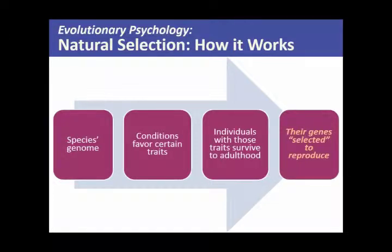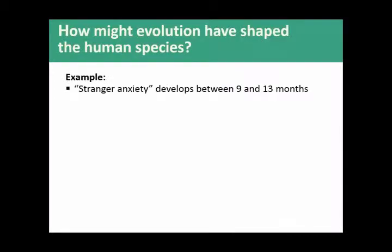There are certain things that are universal, but a lot of things that are not. Evolutionary psychology specifically talks about only those things that are universal to all humans. So how might evolution have shaped the human species? Everybody, between about 9 and 13 months, develops what we call stranger anxiety — being scared of people you don't know and clinging to your mom and dad.